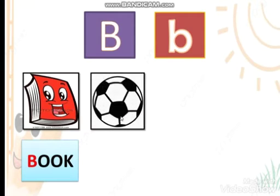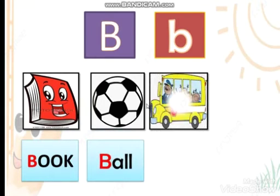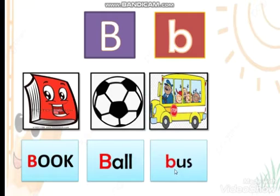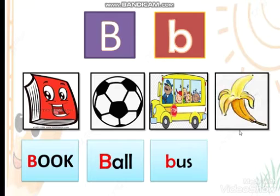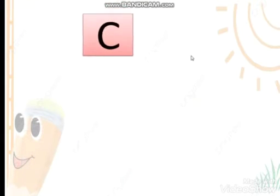Let's move to the next picture. What's this? It's a ball! B is for ball. Amazing! Look — a bus! It's a bus and it starts with letter B. And it's a banana — banana, banana. Amazing!